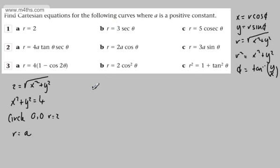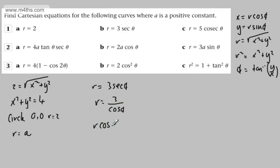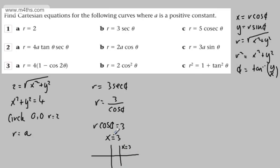These are not always blindingly obvious. For r equals 3 sec theta, rewrite as r equals 3 over cos theta. Multiplying both sides by cos theta gives r cos theta equals 3. Since r cos theta equals x, we get x equals 3 — just a straight vertical line.